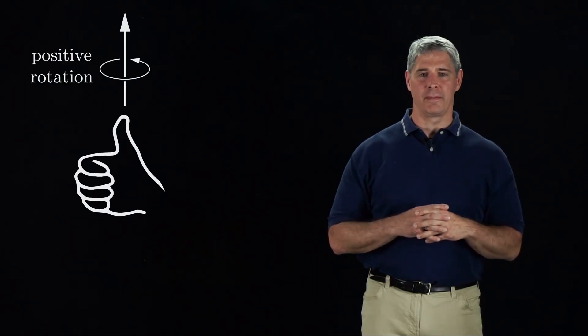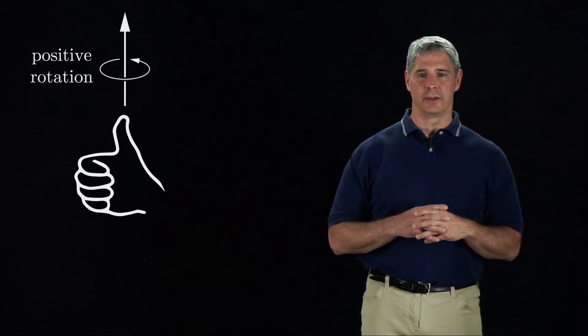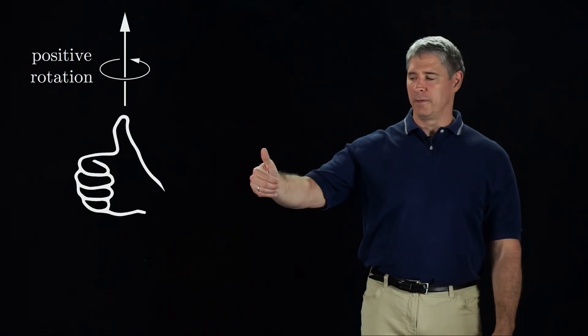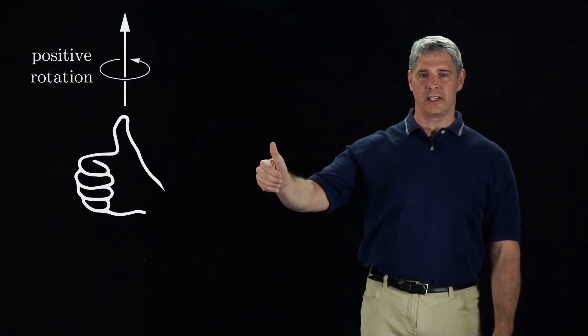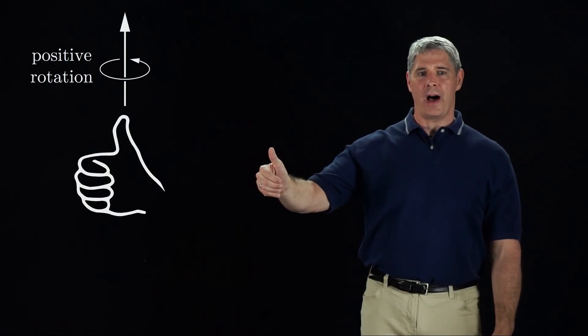Positive rotation about an axis is defined by the right-hand rule. If you align the thumb of your right hand with the axis of rotation, positive rotation is the direction that your fingers curl. With those preliminaries out of the way, in the next video we move on to representing the orientation of a rigid body.